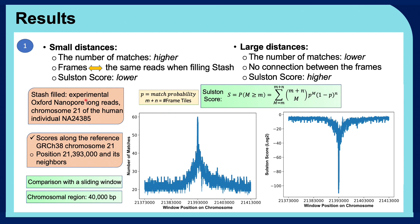As for the experimentation, we have filled the stash with the experimental Oxford Nanopore lung sequencing reads from chromosome 21 of the human individual. And by fixing a window on a randomly chosen position, which is the middle position here, along the reference human genome GRCh38 chromosome 21, and comparing it with a sliding window that moves from the left to the right of this chosen position, we calculate the number of matches and also the Sølsten score values between them.